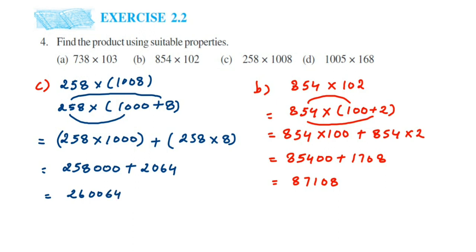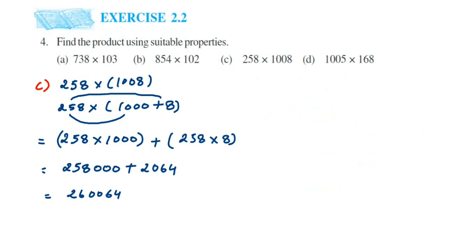Now the last one. You can think of which number to split. We have 1,005 × 168, so we're going to split 1,005: (1,000 + 5) × 168.